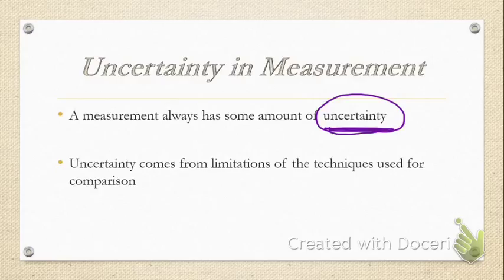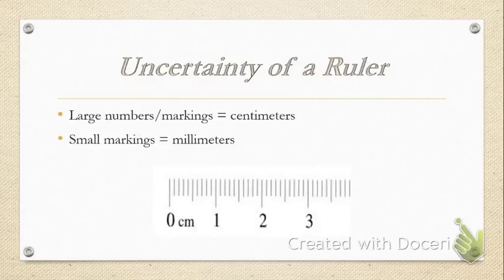The first thing we're going to start with is talking about how to use a ruler. Hopefully, throughout our science or even math careers, we've used a ruler. But we really focus on, in science, starting to learn how to properly use a ruler and use it to the correct number of digits. The first thing you have to understand is we use the metric side of a ruler or meter stick. The large numbers are going to be centimeters. When you look at a ruler, I have a picture down here for you. The big numbers are going to be centimeters.